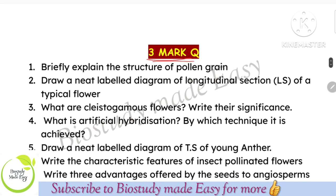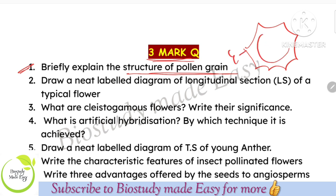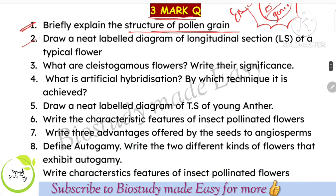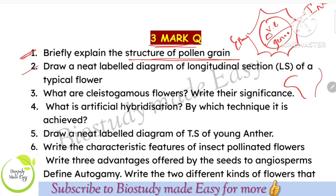Three-mark questions now. Pollen grain structure: it has two layers — outer exine and inner intine. Inside the pollen grain there are two cells: the generative cell and the vegetative cell. The vegetative cell has a large vacuolated nucleus. Draw the simple flower diagram showing petals, sepals, stigma, pistil part, and anther part.